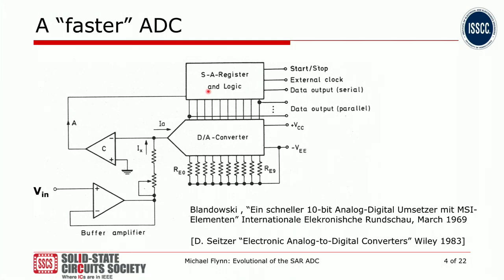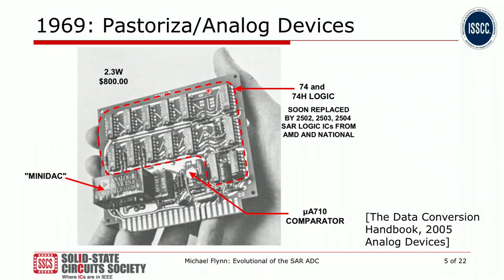The SAR register means a successive approximation register, and that's where the name SAR ADC comes from. The next slide shows an example of a product from around that time: a 12-bit successive approximation ADC from a company called Pastoria, which was bought by Analog Devices in 1969. It's a PCB implementation — at the bottom there's a mini DAC, a current output DAC; on the top are small chips that implement the SAR logic; and down here is the comparator. This card-based ADC consumed 2.3 watts and produced samples at 10 microsamples per second. This picture comes from the Data Conversion Handbook from Analog Devices.